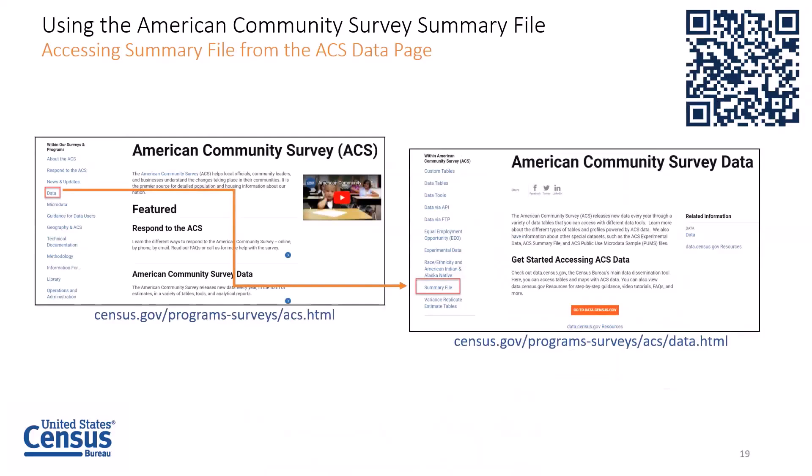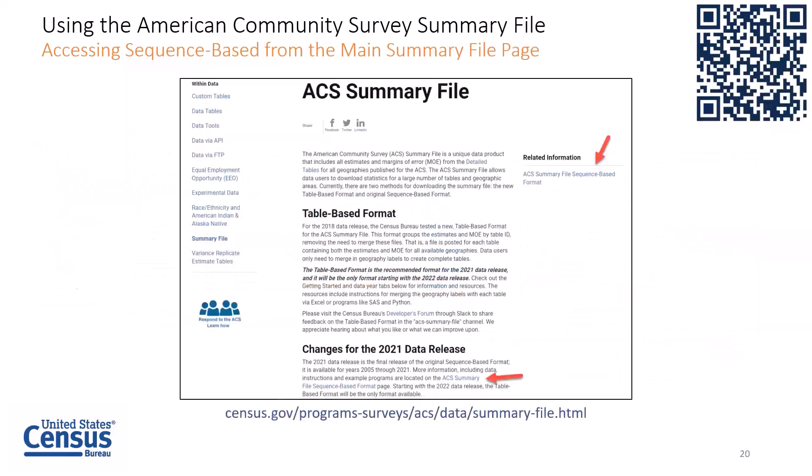To access the summary file, you must first access the ACS data page, then select the summary file link. Once you select the summary file from the data page, you can choose to work with the table-based or sequence-based format provided from 2018 to 2021, or the sequence-based data available from 2005 to 2021. The links to the sequence-based format are found on the right side of the page under related information.